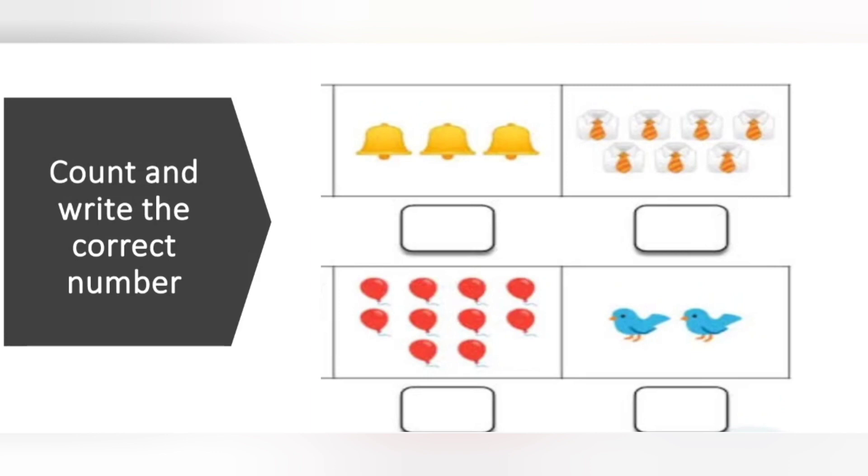Now, count and write the correct number. Till now, we learned till 10 numbers, right? We will count one by one and we will write the number for that. Coming to the first one. 1, 2, 3. How many bells are there? 3 bells. How much do we have to write here? We have to write the number 3.